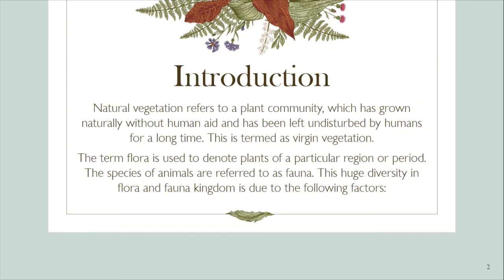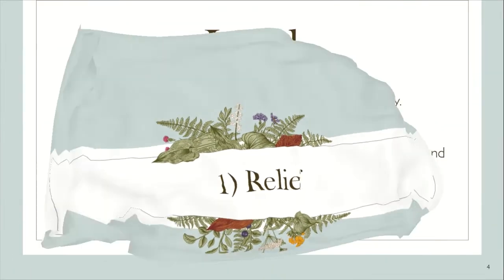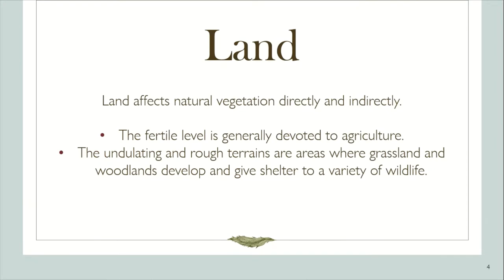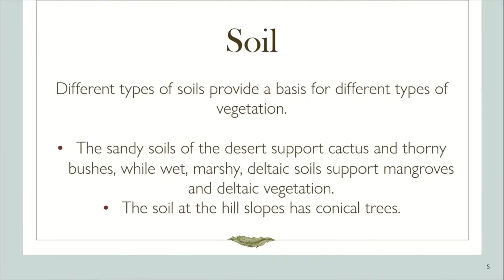First is relief. Land affects natural vegetation directly and indirectly. The fertile level land is generally devoted to agriculture. The undulating and rough terrains are areas where grassland and woodlands develop and give shelter to a variety of wildlife.